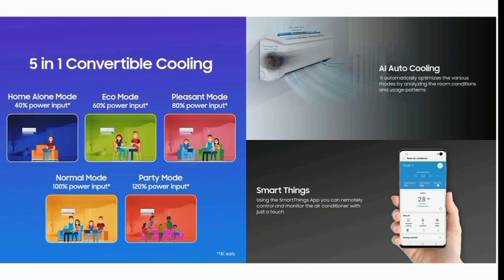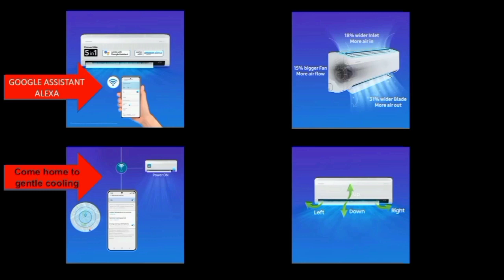If you have the SmartThings app, you can install it on your mobile phone and use it to control your AC. With a simple option, you can use it easily.